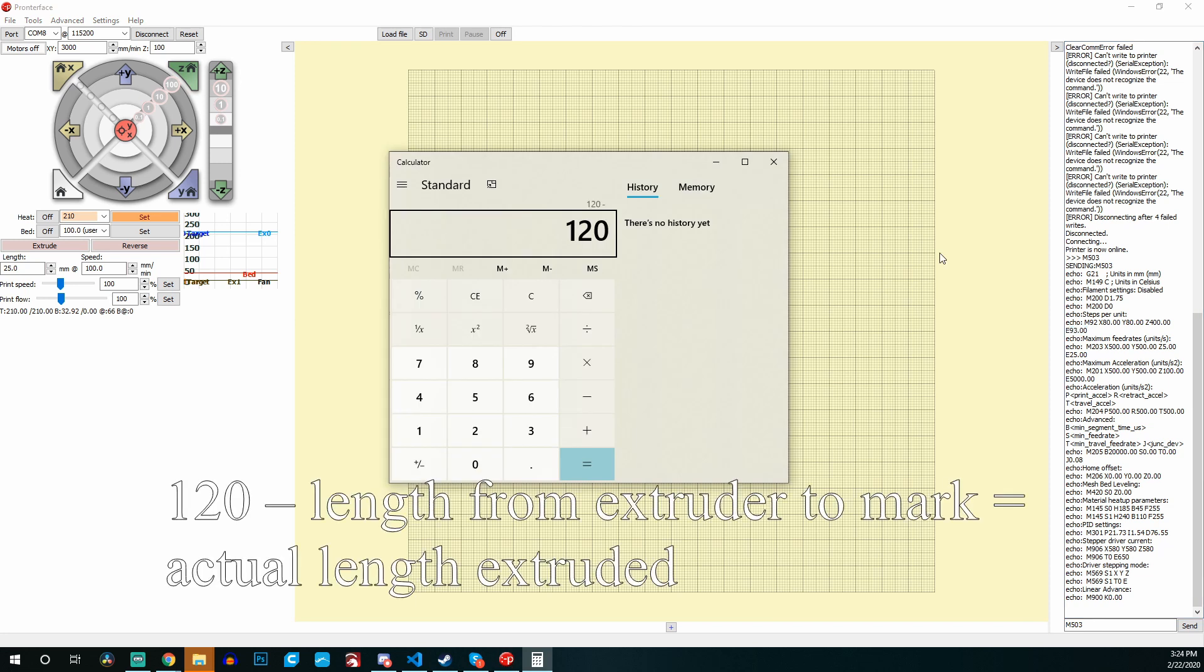Once you're done with that, you'll need to open a calculator and do a little bit of math to get the information we need. The first thing we're going to do is take 120 and subtract the length that was left when you measured. In my situation I had 50.8 left from the extruder to the part I had marked. When you subtract 120 by that value, it gives you the actual length that was extruded. Make sure you write down that actual length.